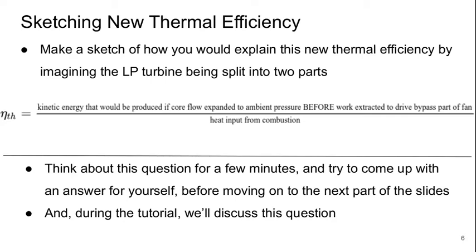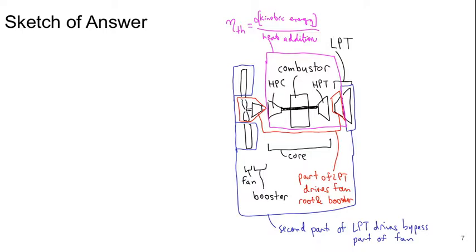Okay, so we now have this problem before us where we want to visualize what this conceptual splitting of the LP turbine would look like, and here's a sketch I made of the answer. So our thermal efficiency now includes the entire core plus part of the LP turbine, and that accounts for the work that was extracted to drive the core. Actually, I realized there's a little bit of an error in this figure.